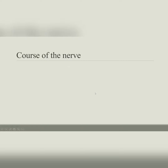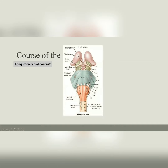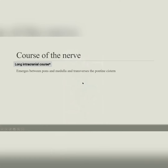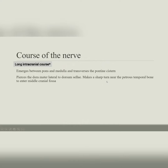The course of the nerve: the abducens nerve has the longest intracranial course of any cranial nerve, which is very important clinically. This long course affects the presentation of lesions. The nerve exits at the pons, between the basal surface of the pons and the pyramid of the medulla oblongata. It then traverses the pontine cistern, pierces the dura mater lateral to the dorsum sellae (part of the sphenoid bone), and makes a sharp turn near the petrous temporal bone to enter the middle cranial fossa.